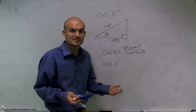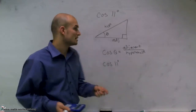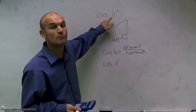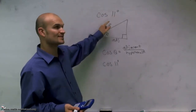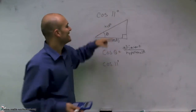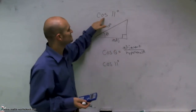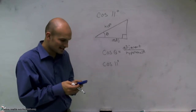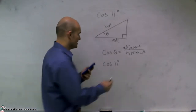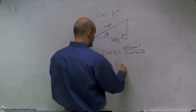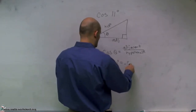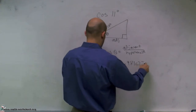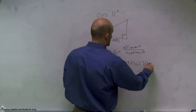We can take any scientific or graphing calculator, and all I'm simply going to do is make sure I'm in degree mode. Then what I'm going to do is type in cosine of 11 degrees. Cosine of 11 degrees gives me 0.981627183.